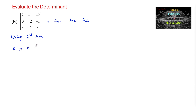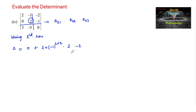The second element is 2, and its position gives a sign of (-1)^(2+2). Then plus (-1) times its element, with position sign (-1)^(2+3) for the third term.